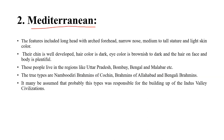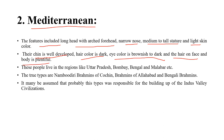The second subtype is Mediterranean itself. Features include long head, arched forehead, narrow nose, medium to tall stature, and light skin color. The chin is well developed. Hair color is dark, eye color is brownish to dark, and hair on face and body is plentiful. These people live in regions like Uttar Pradesh, Bombay, Bengal, and Malabar. Nambudri Brahmans of Cochin and Bengali Brahmans are examples.